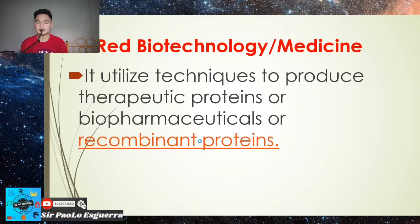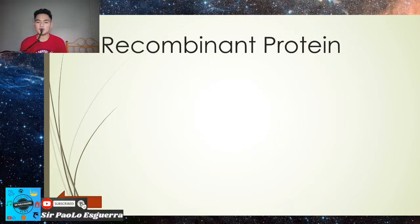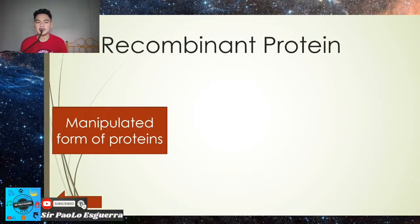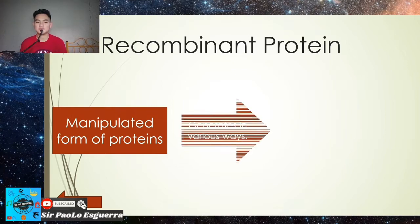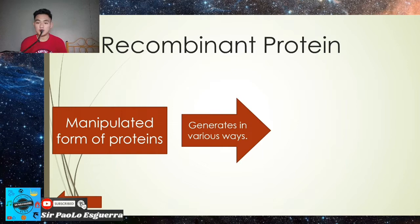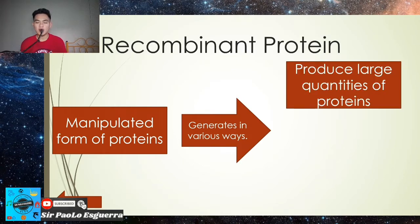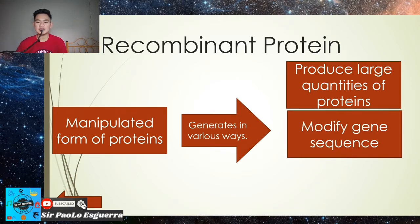Now let's look at recombinant protein. Recombinant protein is the manipulated or modified form of protein. It generates in various ways: first, to produce large quantities of proteins; and when we undergo recombinant protein, the gene sequence will also be modified.